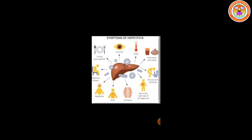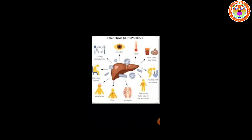Signs and symptoms of hepatitis B range from mild to severe. They usually appear about one to four months after you have been infected, although you could see symptoms as early as two weeks post infection. Some people, usually young children, may not have any symptoms. The symptoms may include abdominal pain, fever, loss of appetite, nausea, vomiting, yellowing of eyes and skin, light-colored stools, itching of skin, headache, joint pain, and dark urine.